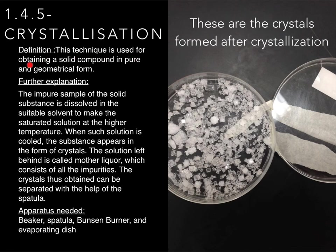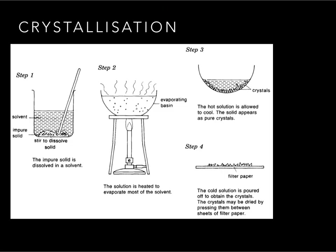Crystallization is used for obtaining a solid compound in a pure and geometrical form. The impure sample of the solid substance is dissolved in a suitable solvent to make a saturated solution at higher temperature. Step one: have a mixture of a solvent and an impure solid — for example, copper sulfate — and dissolve it in the solvent. Step two: take this mixture, stir it, and heat it until most of the solvent has evaporated.